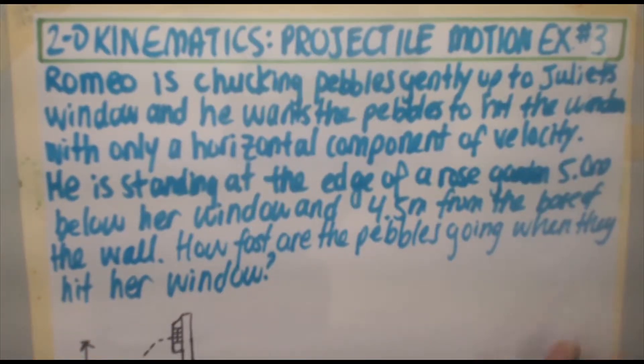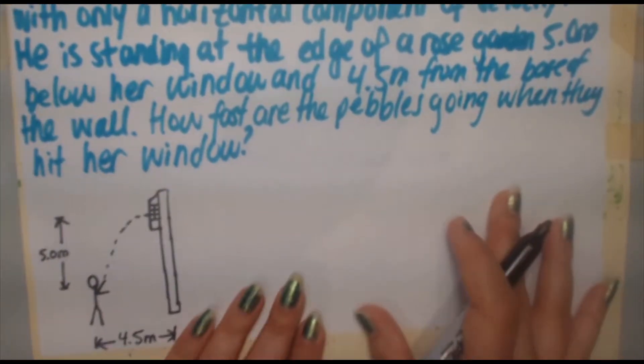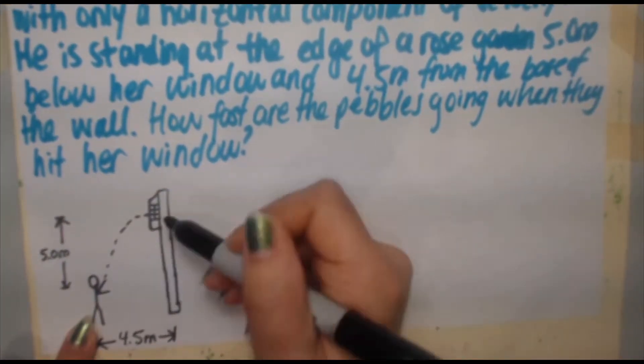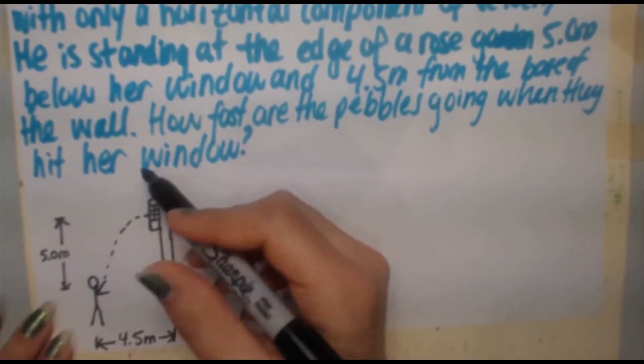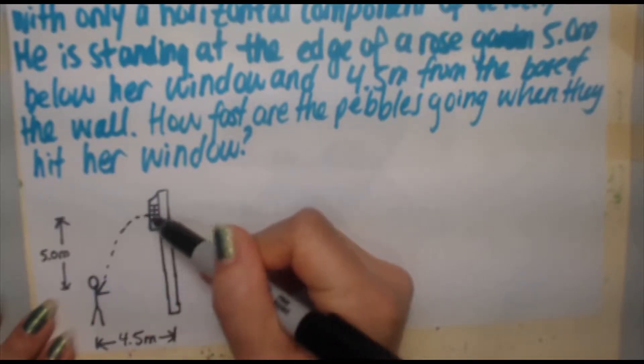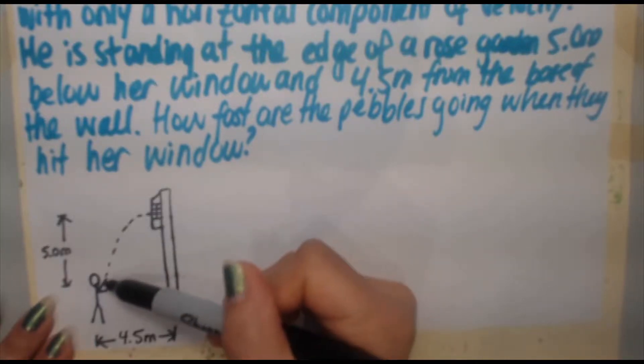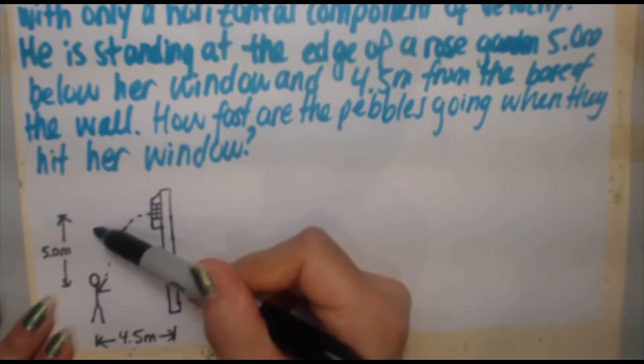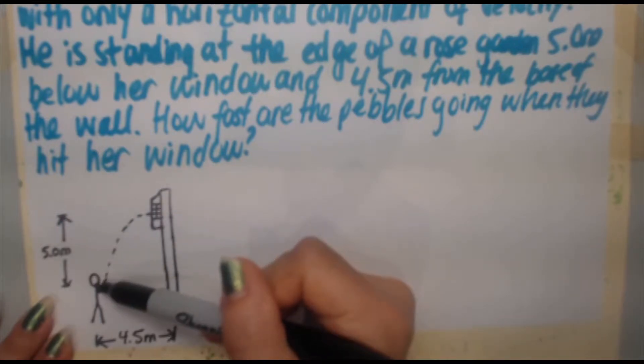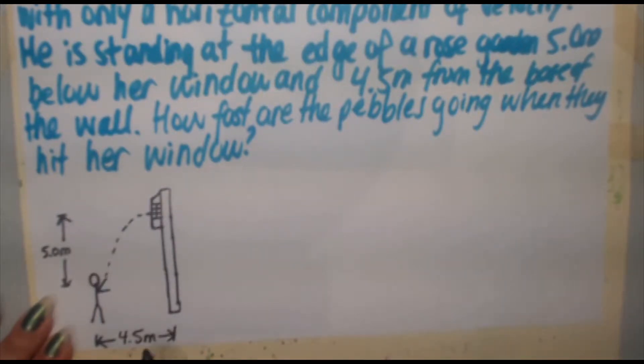Here is the image given in the problem. Here you got Romeo. Here's the wall, Juliet's window. You've got the upward trajectory of the pebble and notice at the top there's only a horizontal component. From where he releases the pebble to where it hits her window there is a vertical displacement of 5.0 meters and he's 4.5 meters away from the base of the wall.